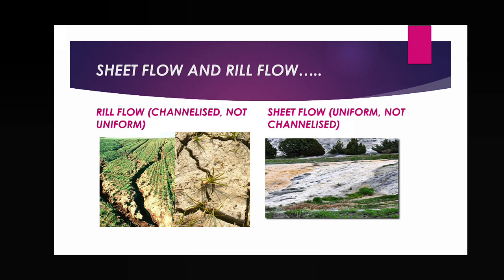Slope controls the flow of water and the rate of erosion. In steep slope areas, the difference between maximum and minimum height is more, so the speed of water is more and the rate of erosion is also more. In gentle slope areas, the difference between maximum and minimum height is very less, so the rate of erosion is less.